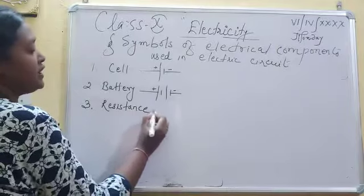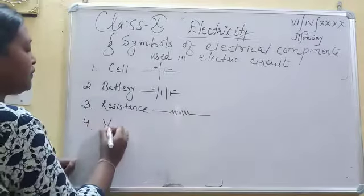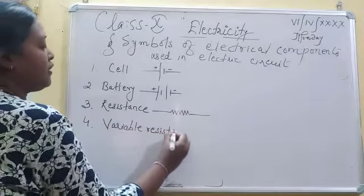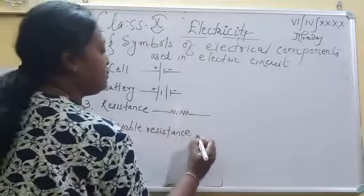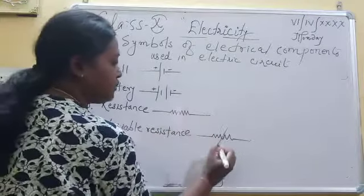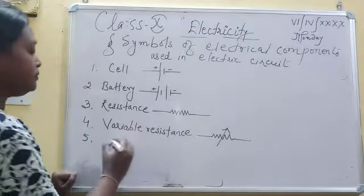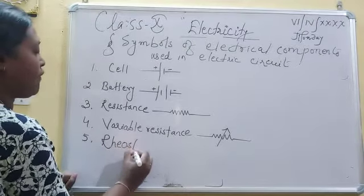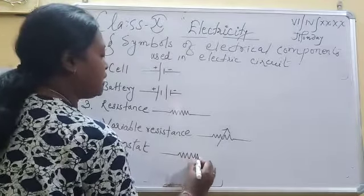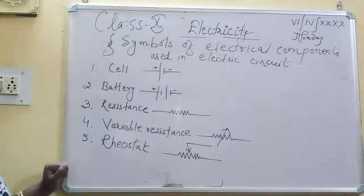Resistance is represented as this symbol. Fourth is variable resistance. Variable resistance has a constant value and a variable particular value that varies. This is the symbol for variable resistance. Next is rheostat. Rheostat is represented as — actually, what is rheostat? Rheostat is the same as the variable resistance. This is the symbol of rheostat.